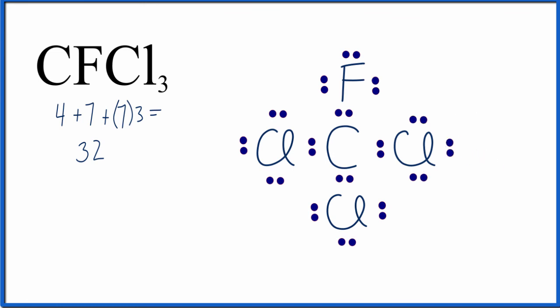So now we've put the valence electrons around the outside. We've used all 32 valence electrons, and we've got the octets for each of these atoms.